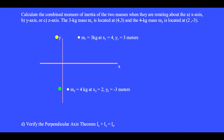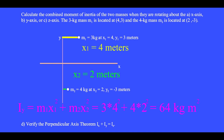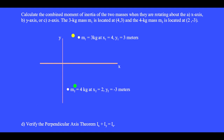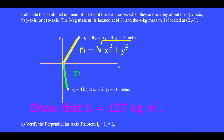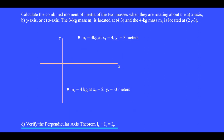When spun about the y-axis, mass 1 is the distance x1 from the y-axis and mass 2 is the distance x2 from the y-axis. Please show that the total moment of inertia is 64 kilogram meter squared. When spun about the z-axis, mass 1 is the distance r1 from the axis and mass 2 is the distance r2 from the axis. Show that the moment of inertia of both masses about the z-axis is 127 kilogram meter squared. Verify the perpendicular axis theorem: the moment of inertia about the x-axis plus the moment of inertia about the y-axis equals the moment of inertia about the z-axis for any planar object.